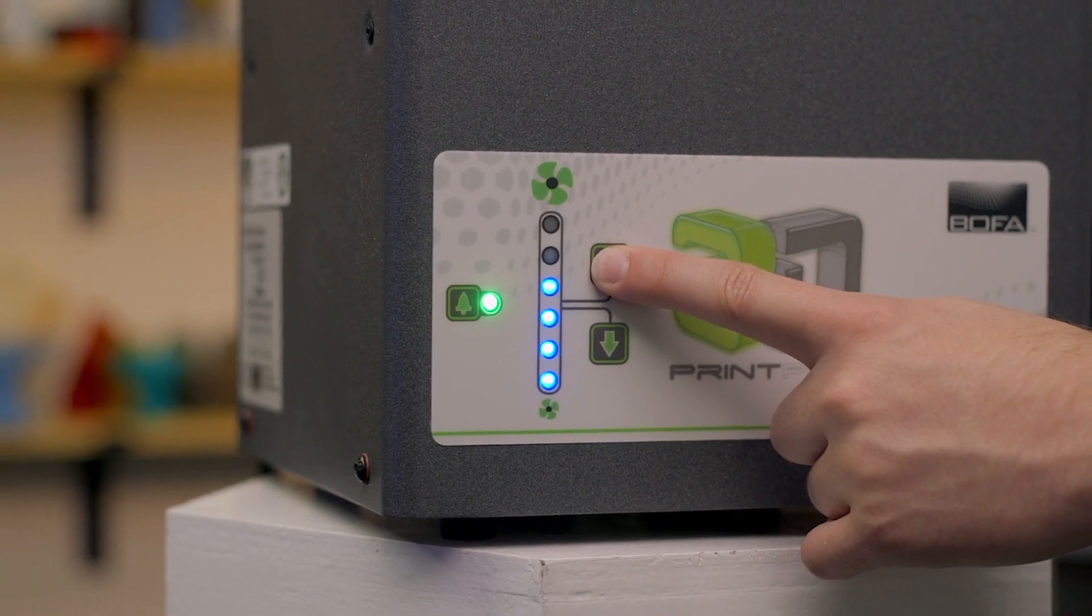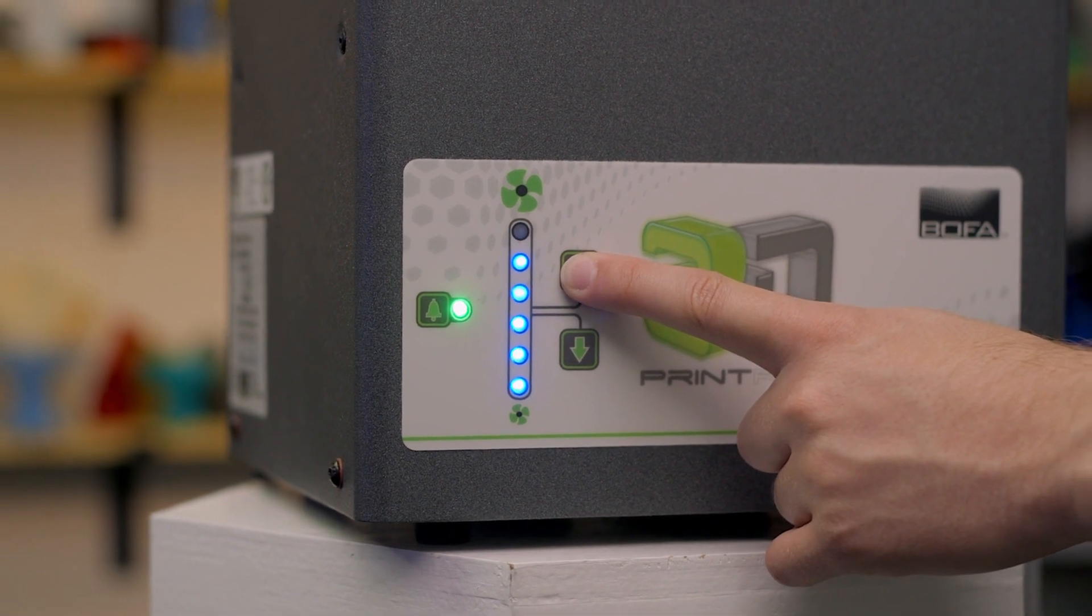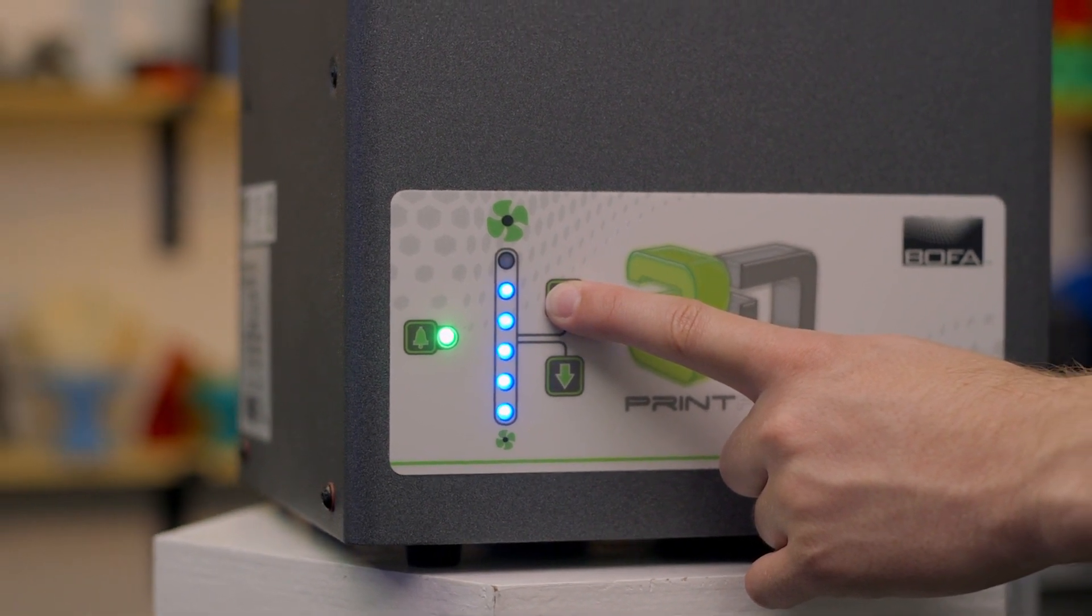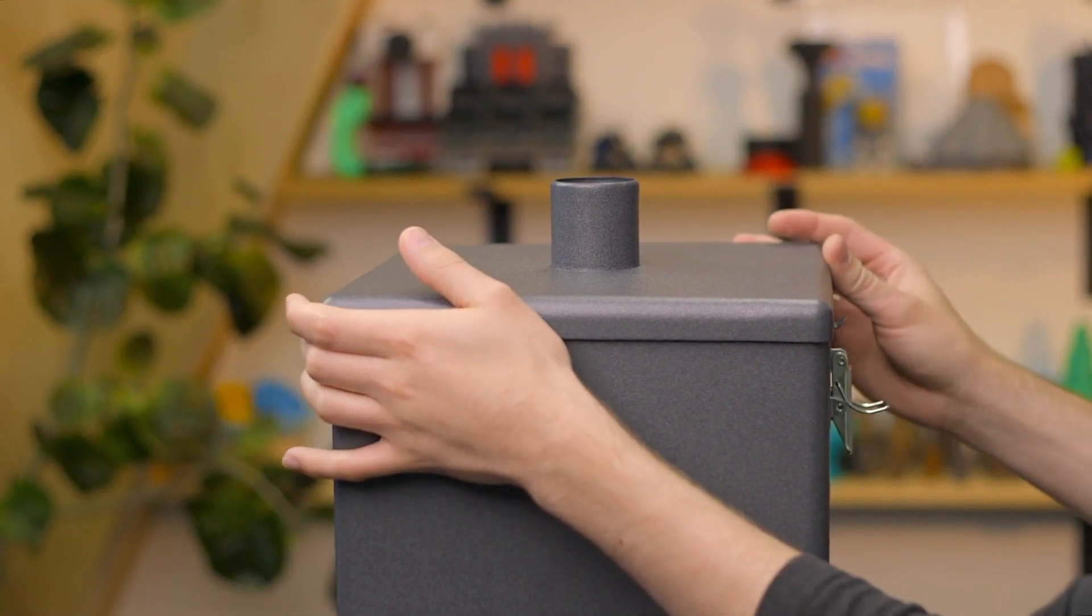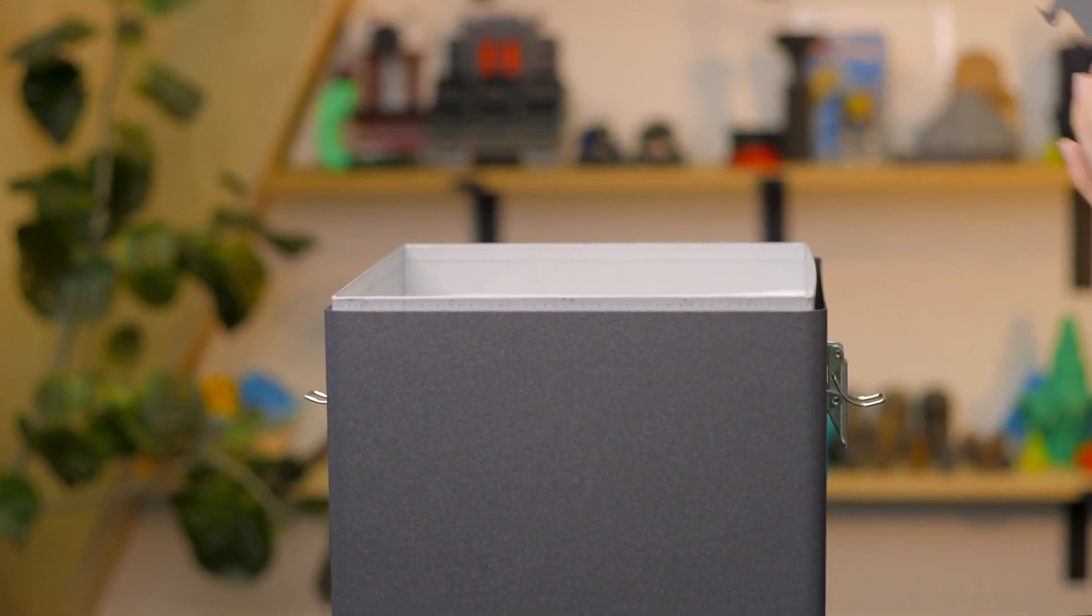At a glance, the front panel will tell you if your filters are ready for a change and let you select one of five speed settings for the internal fan. The two side latches make it easy to pop open the Print Pro 3 system, change out your filters, and get back up and running.